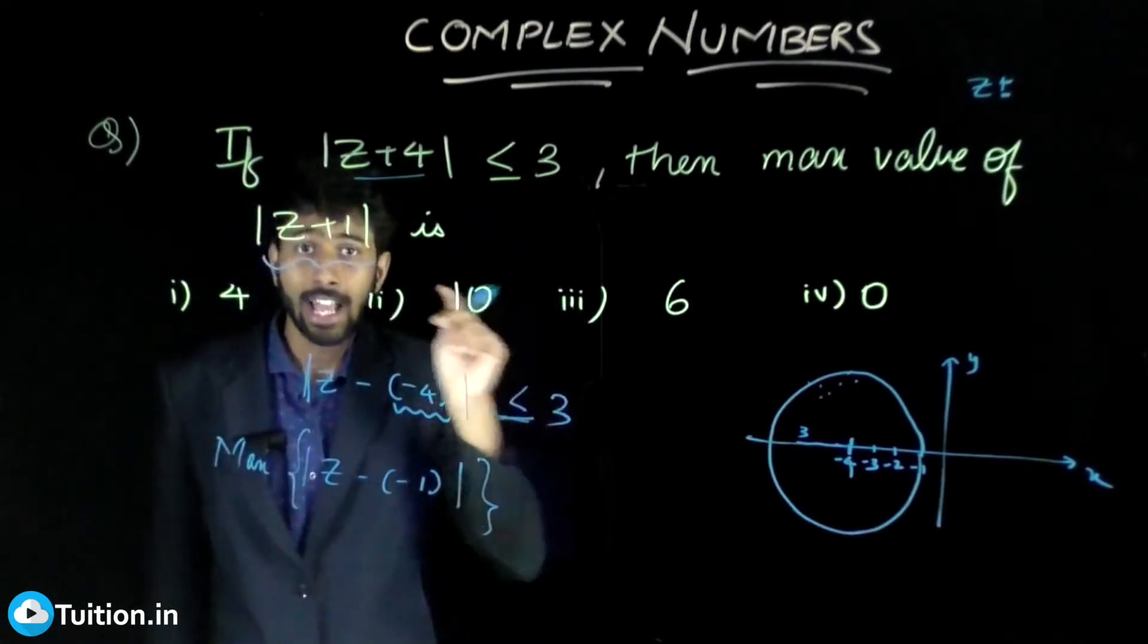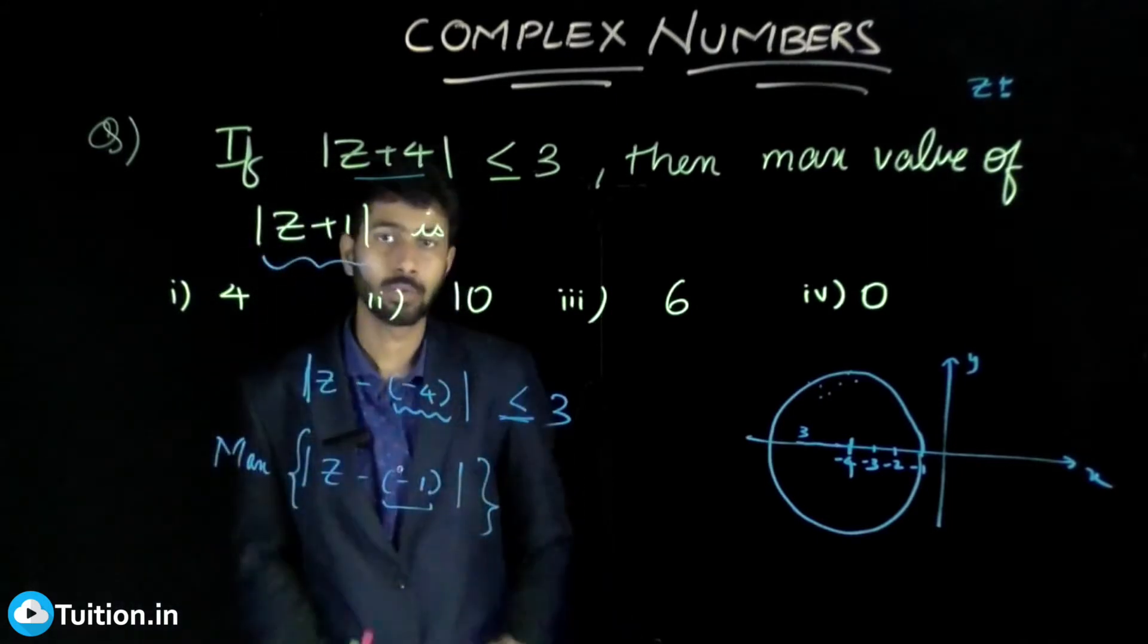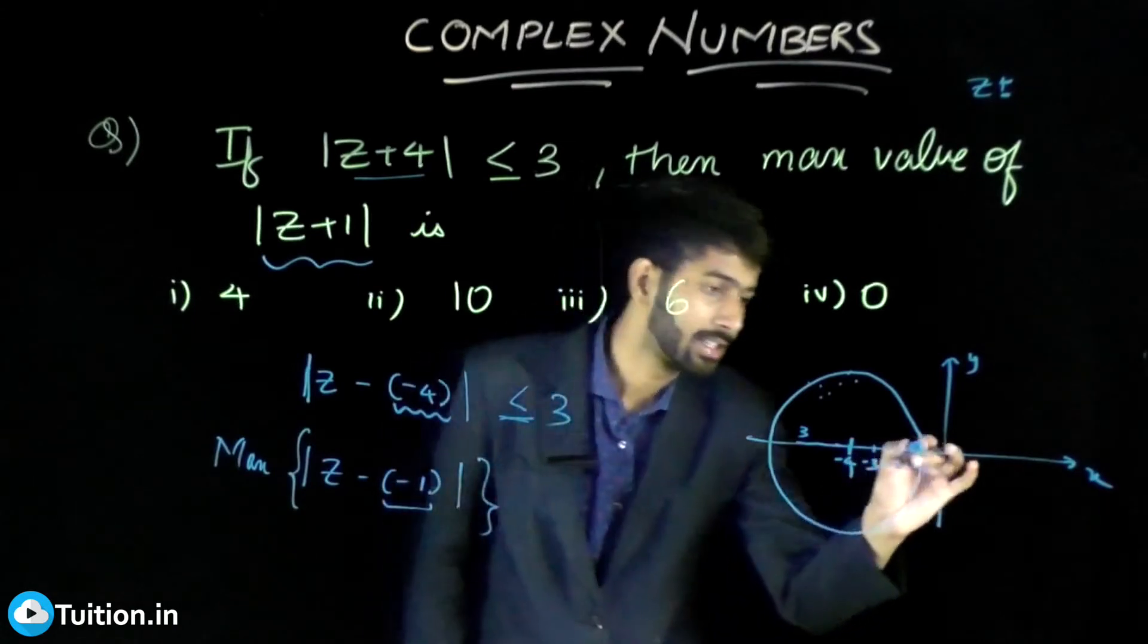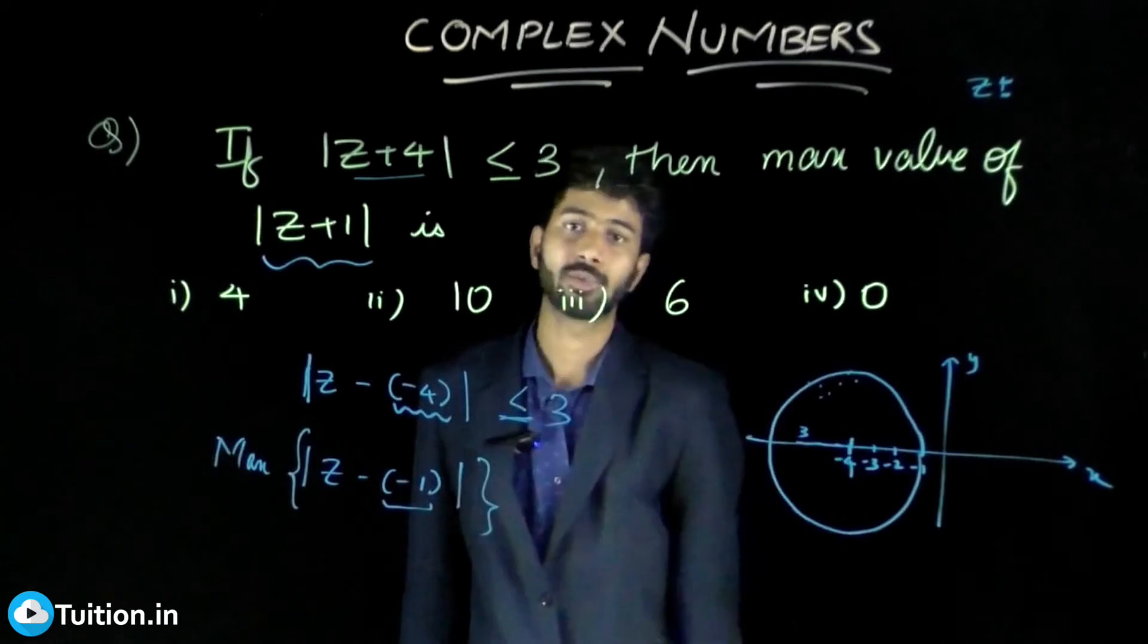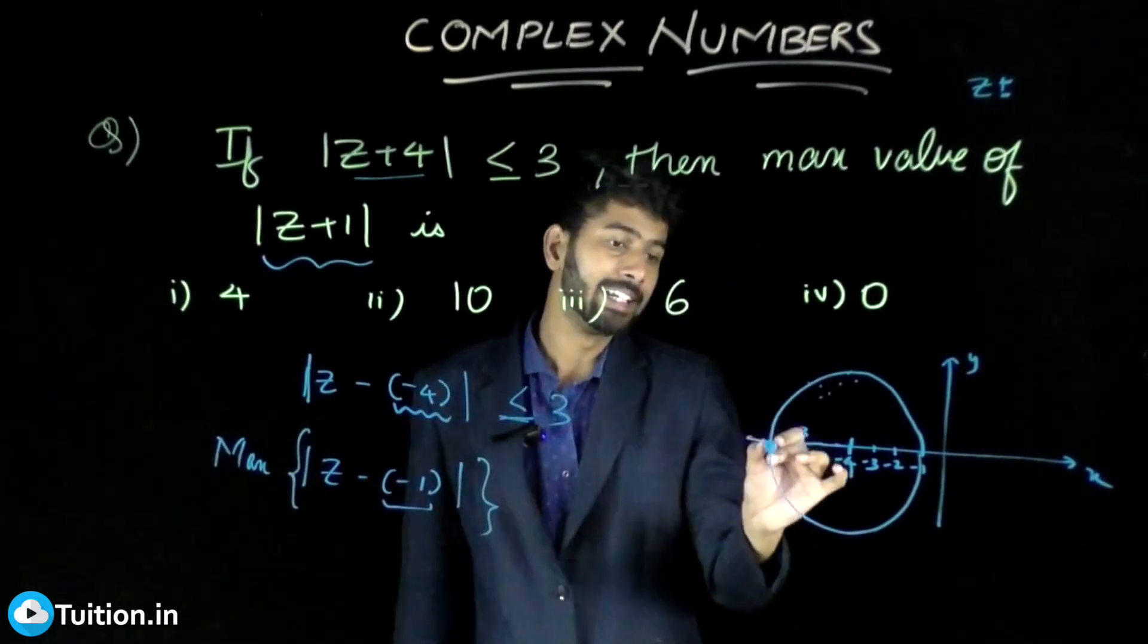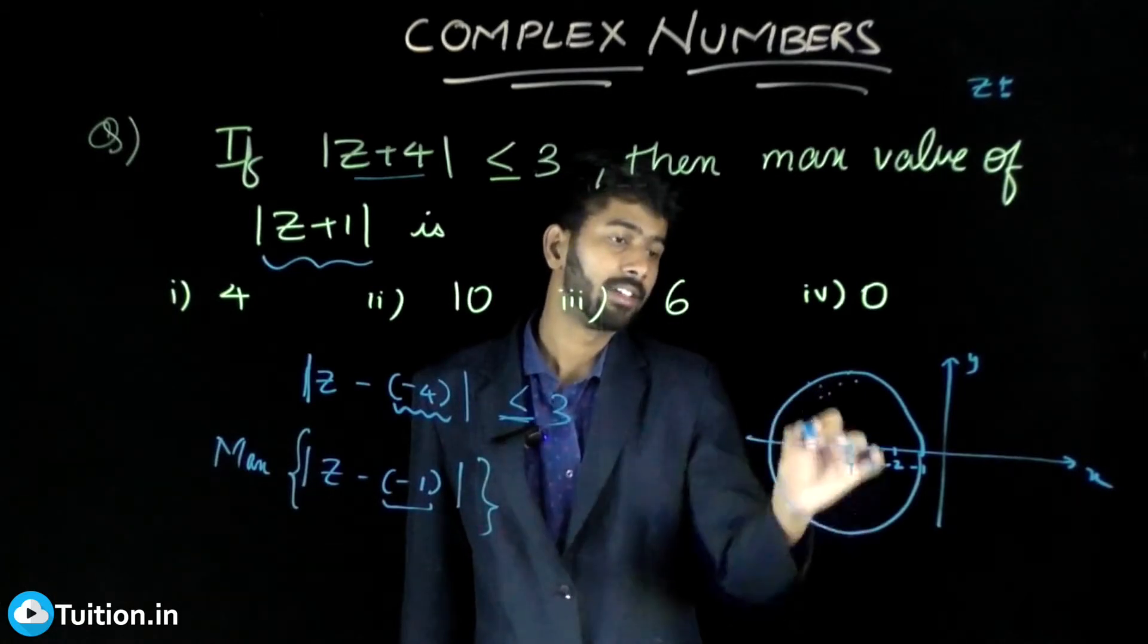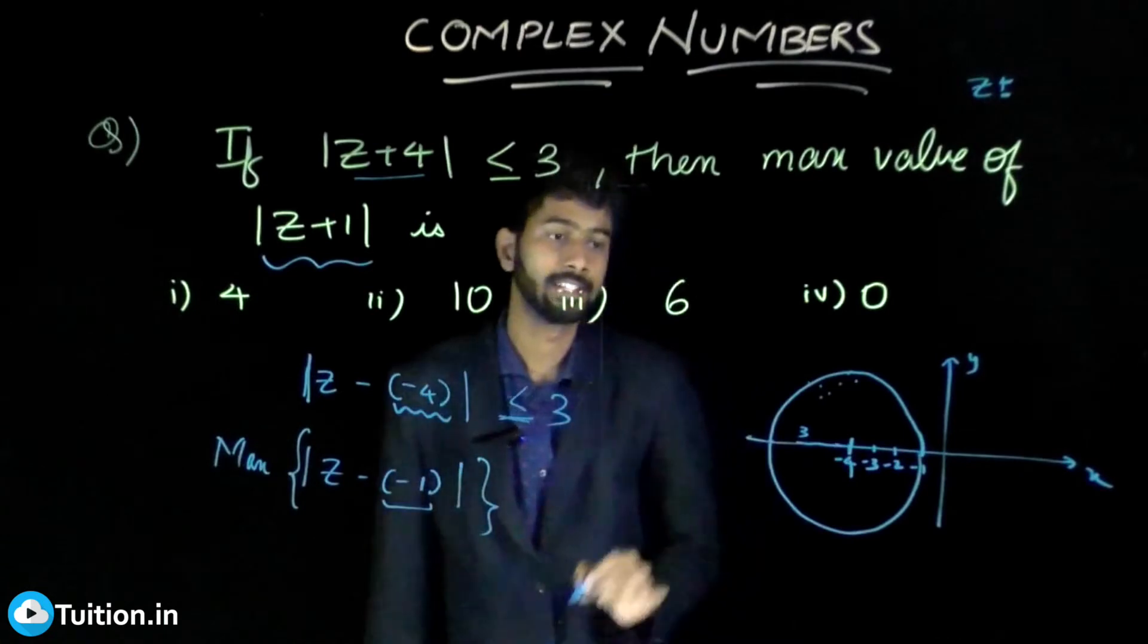So there are infinite z's. I need that z which is the farthest from minus 1. This is minus 1 here. Can you tell me on the circle which z is farthest from minus 1? It is this point. Because anything other than this point will be closer to minus 1 compared to this point. This is the farthest. That is what the power of geometry is.